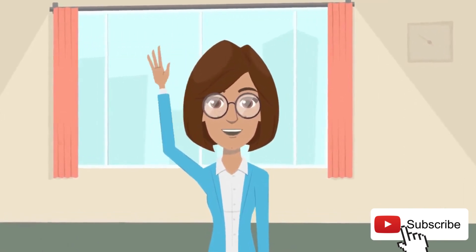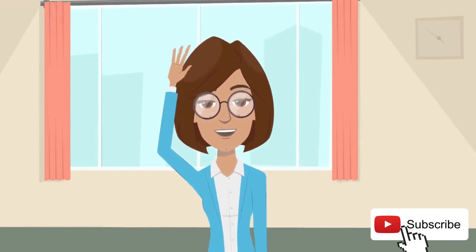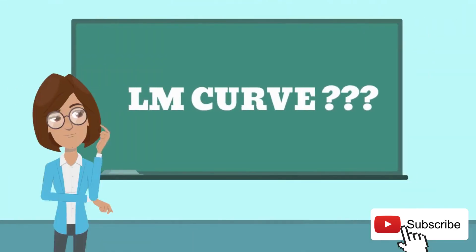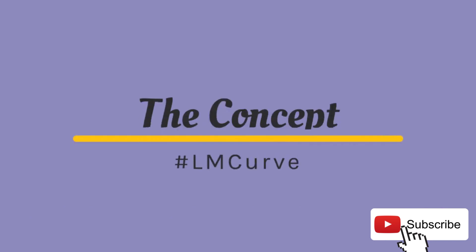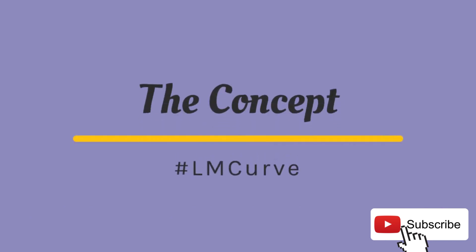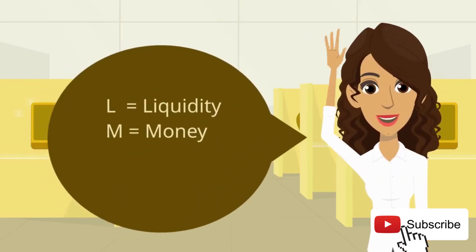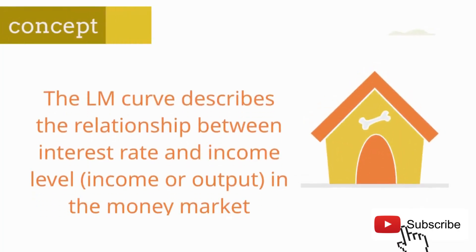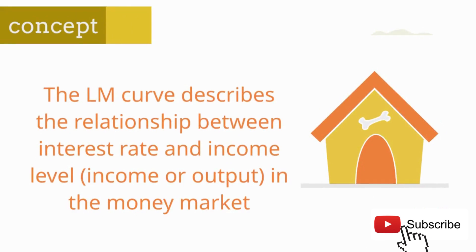Hi everyone, welcome back to this channel. In this video I will explain the LM curve. LM stands for L, which refers to liquidity, and M, which refers to money. The LM curve describes the relationship between interest rate (R) and income level or output (Y) in the money market.